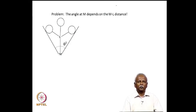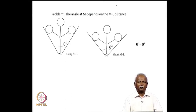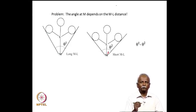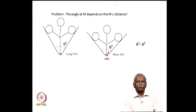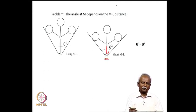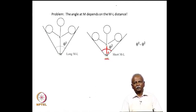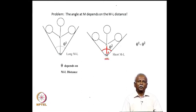A second difficulty Tolman encountered is that the angle subtended by the ligand at the metal can change. Imagine the same ligand approaching the metal more closely — if one metal is a better pi donor, the phosphine might coordinate more tightly, shortening the metal-ligand distance. When it comes closer, the cone angle theta becomes greater. This means the cone angle is dependent on the metal because it depends on the metal-ligand distance.